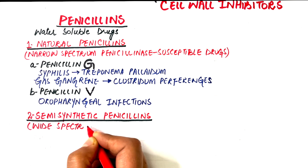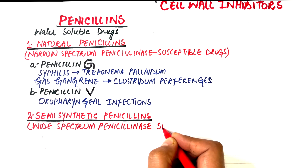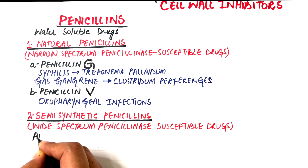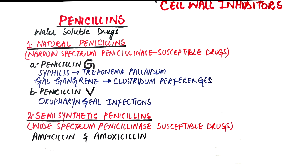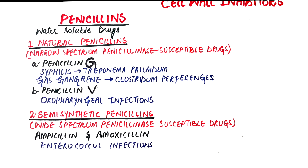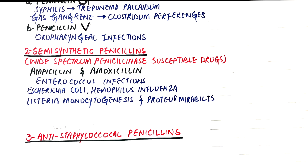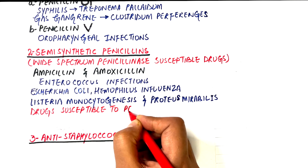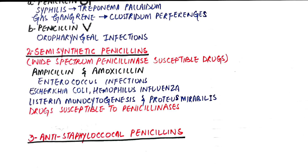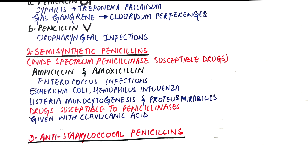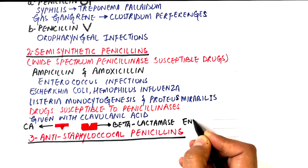Semi-synthetic penicillins, also known as wide-spectrum penicillinase-susceptible drugs, include ampicillin and amoxicillin. These drugs can fight infections arising from enterococci, including Haemophilus influenzae, Escherichia coli, Listeria monocytogenes, and Proteus mirabilis. Although they are of wide spectrum, they remain highly susceptible to penicillinases or beta-lactamase enzymes produced by gram-positive and gram-negative bacteria. That's why these drugs are mostly given with clavulanic acid, which is a beta-lactamase inhibitor. Clavulanic acid binds with the beta-lactamase enzyme before it can open the beta-lactam ring, making the drug available for its intended action.